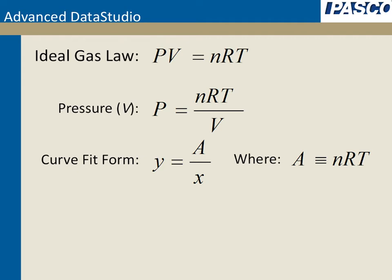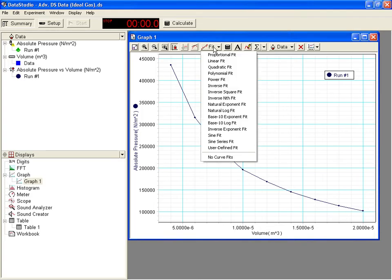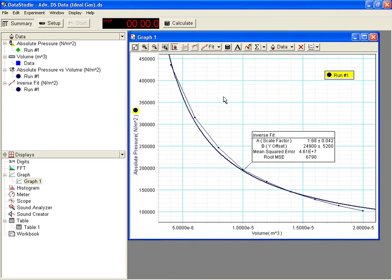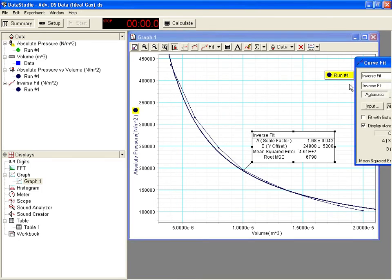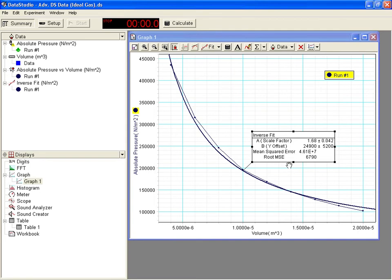But before we do that, we need to get a curve fit that works. Let me show you how this works and doesn't work. First, I'm going to show you how this doesn't work. If we go in here and turn our inverse fit on, you'll see that the model for this is exactly what we're looking for - A over x plus B - but it doesn't fit the data. It goes well outside the scope of the data points. There's a huge error. Something's not right.